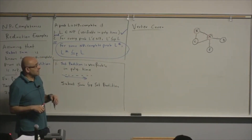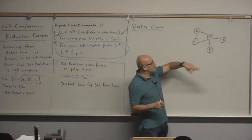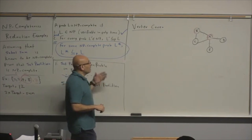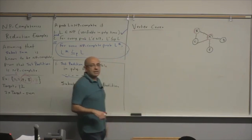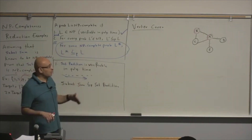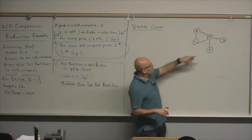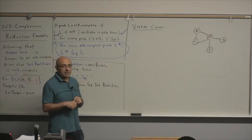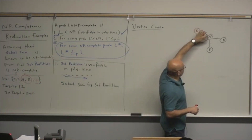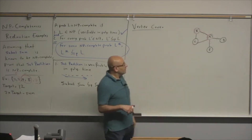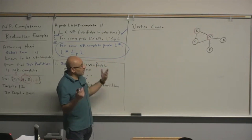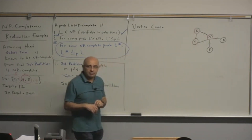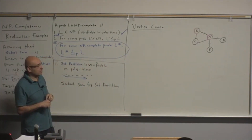One possible application is that these edges represent roads and the vertices represent intersections. You want to post an ad such that all roads will have it. When you put an ad at an intersection, you cover all the roads that intersect at that point. So what's the minimum number of ads you need to post such that all roads are covered?